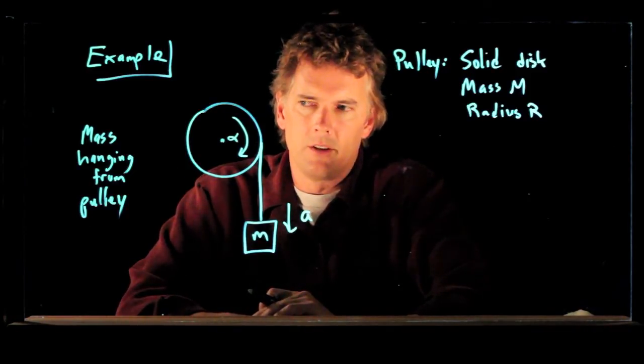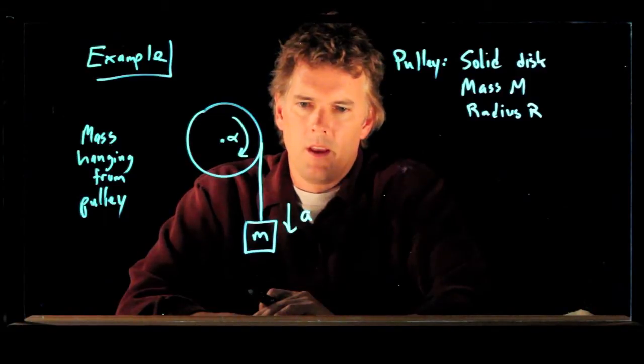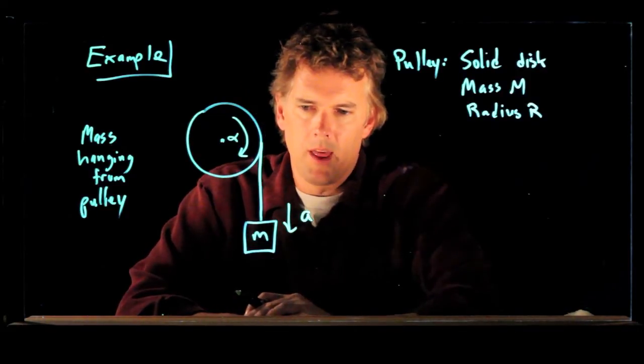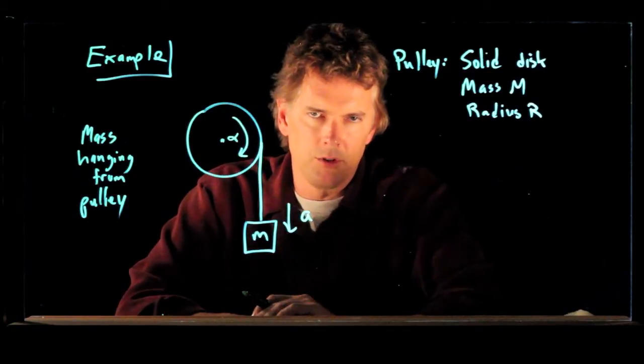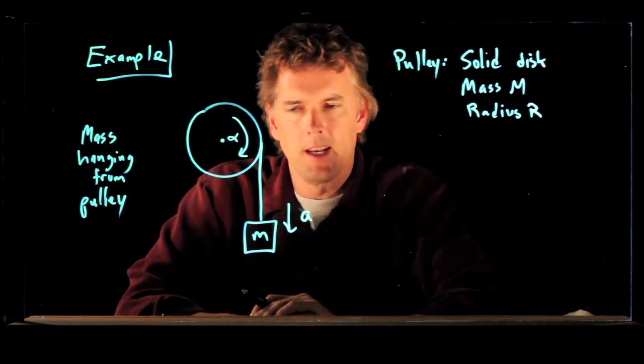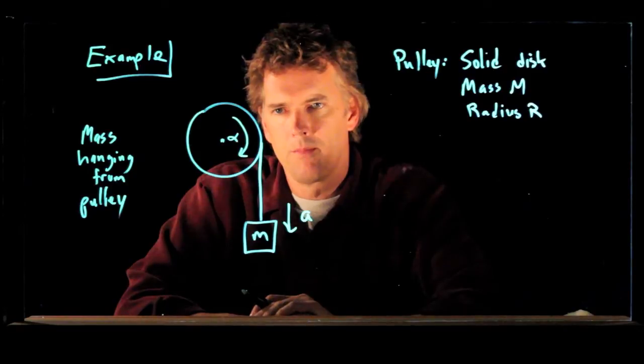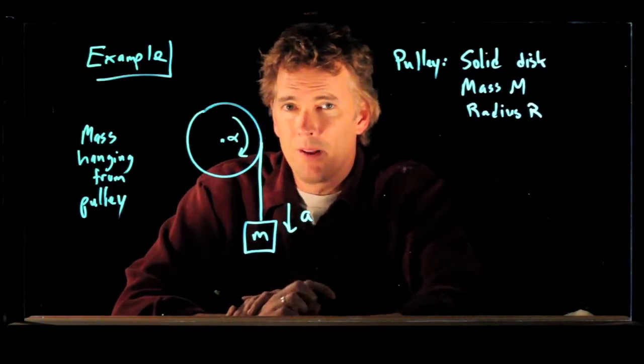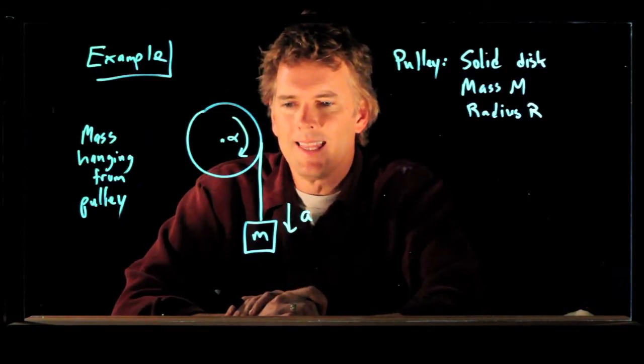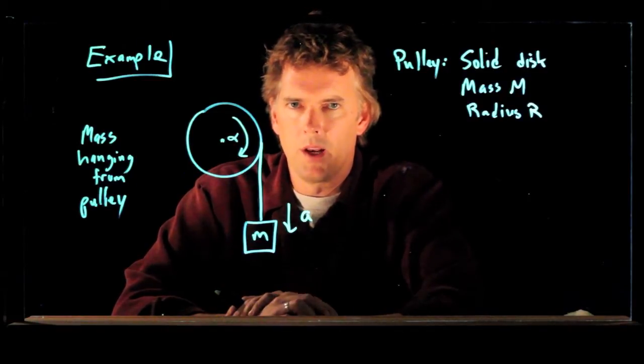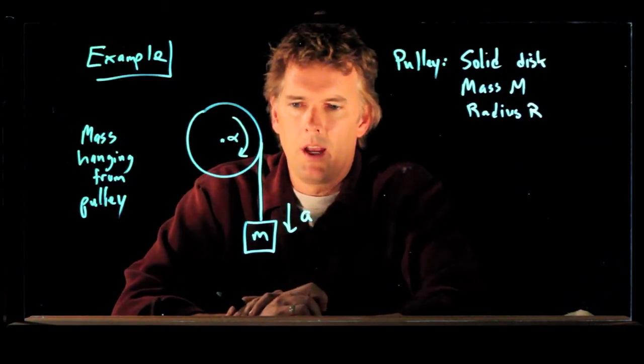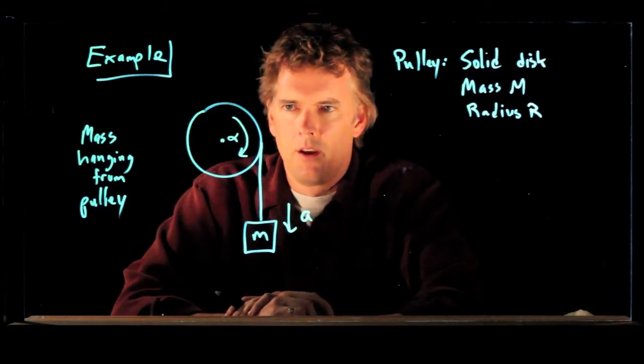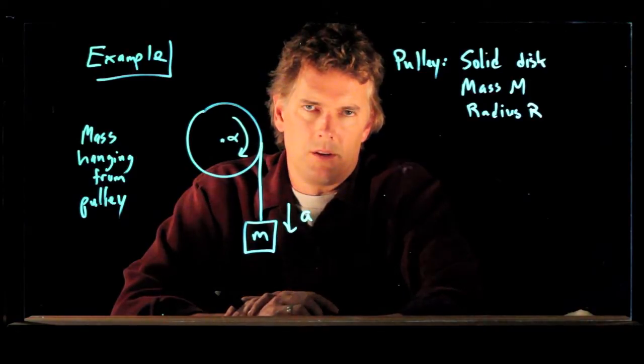Now let's use a little intuition here. If there was nothing connecting the mass to the pulley, then the box would just fall at gravity, 9.8 meters per second squared. But since it's tied to this thing, it's probably going to fall at something less than 9.8 meters per second squared. And so when we're all done, we had better make sure that that is the case.